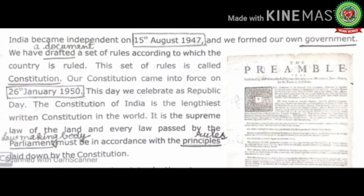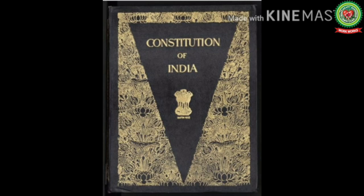The Constitution of India is the lengthiest written constitution in the world. It is the supreme law of the land, and every law passed by the Parliament must be in accordance with the principles laid down by the constitution. Parliament means law-making body; principles means rules. Our constitution is the fundamental legal document that contains the rules according to which the government of a country functions.